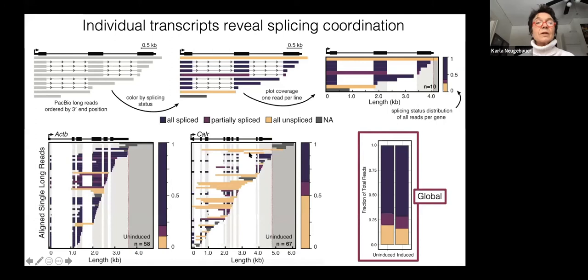Here are a few gene examples, actin and CalR. What you notice is, on a gene-specific basis, a difference in the fraction that are unspliced. This gene has more unspliced transcripts than this gene here. Actin tends to be very efficiently spliced, and you see a lot of all spliced transcripts. For example, here, the three prime end of the transcripts, the polymerase is within this exon, and the upstream introns have already been removed. If we look globally, you can see that the fraction of total reads that's all spliced is the vast majority of the reads, and there's a smaller fraction that's partially spliced and all unspliced.